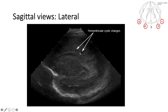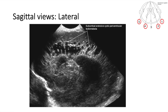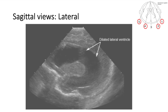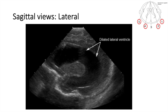We're starting to see a few cysts here, which represents PVL or periventricular cystic changes. This is a much worse picture representing extensive cystic periventricular leukomalacia. We also look at ventricular dilation — this very dilated ventricle most likely represents post-hemorrhagic hydrocephalus.